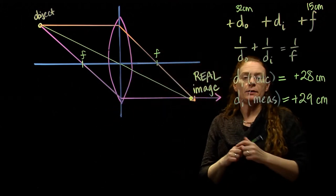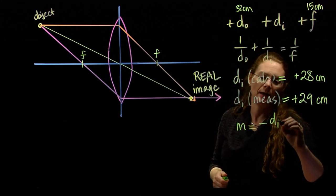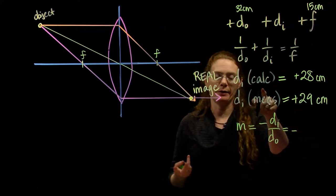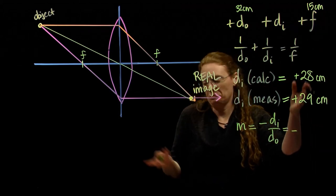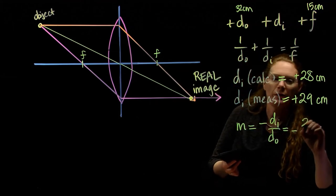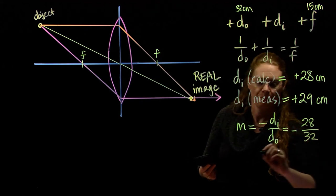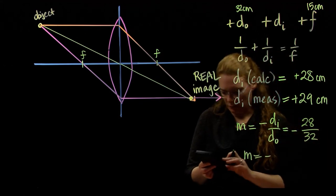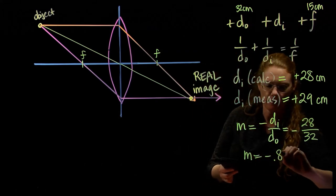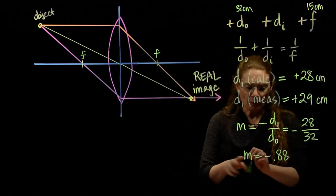We can do our next step, which is our magnification. It is minus DI over DO. In this case DI, I tend to use the calculated. If you use your measured, you should get about the same number. So minus 28 over DO, 32. M is negative 28 over 32, negative 0.88. And now we can stop and say, what does that mean? M is negative. The negative tells me that the image is inverted.